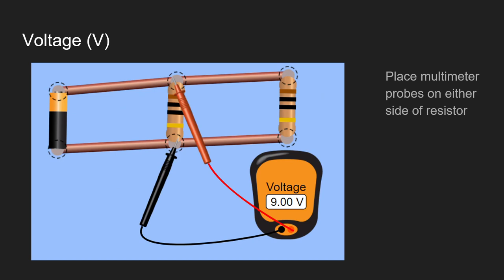So how we measure voltage is that we take a multimeter and place its probes on either side of the resistor that we wish to measure the voltage of.